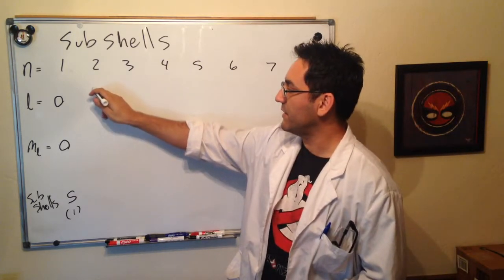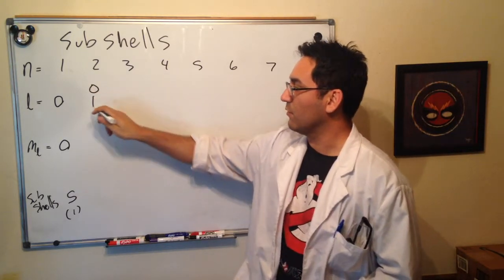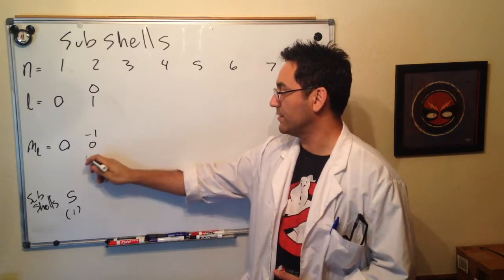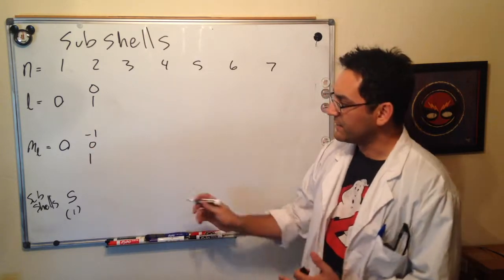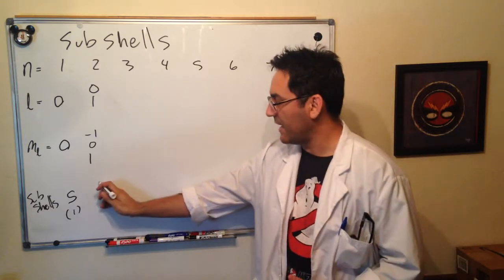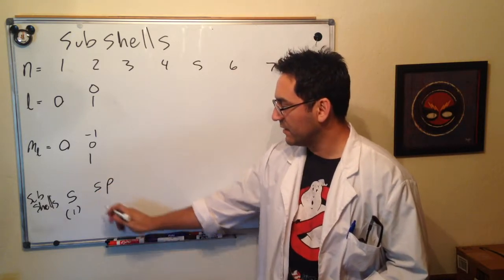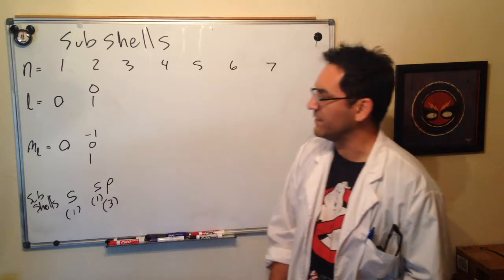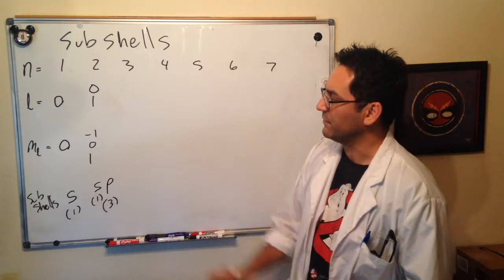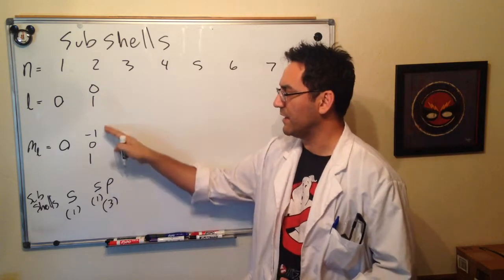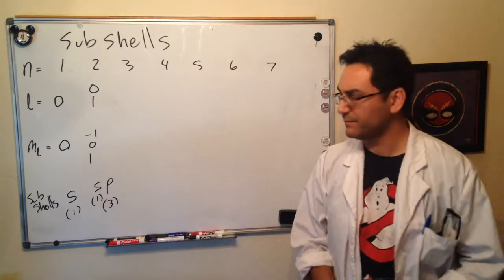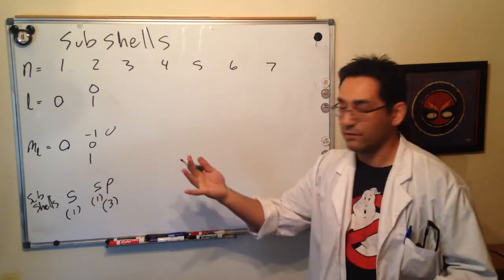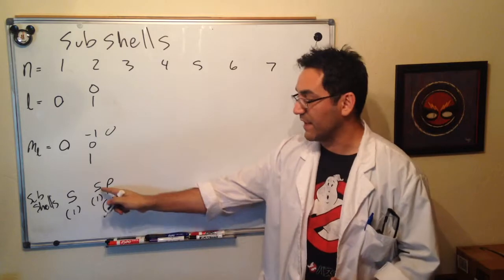All right. So now n equals 2. So l can be 0 or 1. ml can be minus 1, 0, or 1. And so we get an s and a p. And there's one s, but there's three of these p shells. Right? Whenever l is 1, we get these three values. For p, whenever l is 0, we also get a 0 for ml. That's the s.